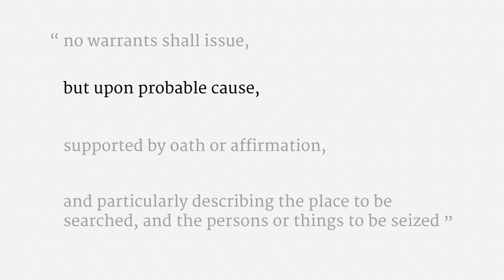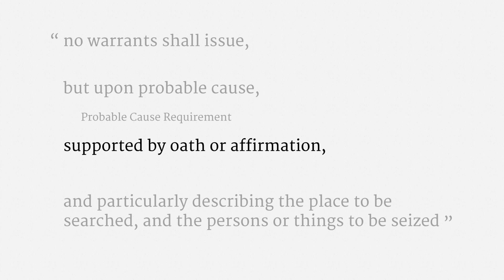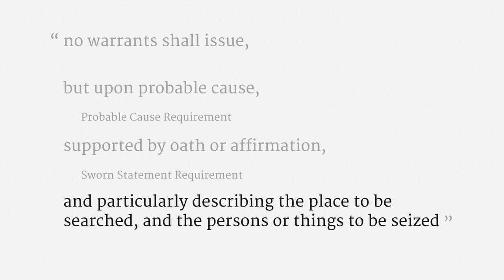The next part tells us the substantive standard required for a warrant — that's probable cause, which we'll return to soon. The third part explains how probable cause is established: it's a sworn statement by a government officer, usually provided in a somewhat formal write-up called an affidavit. The last part is usually called the particularity requirement, which mandates some specificity in what the warrant covers.